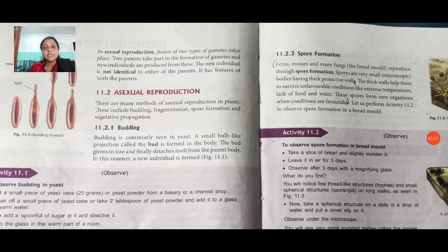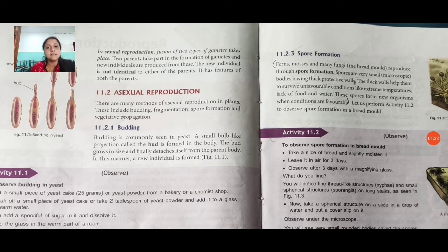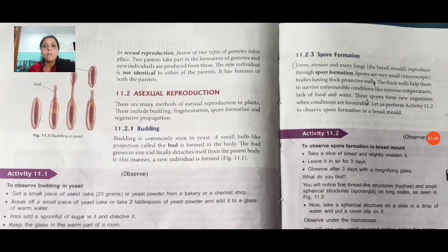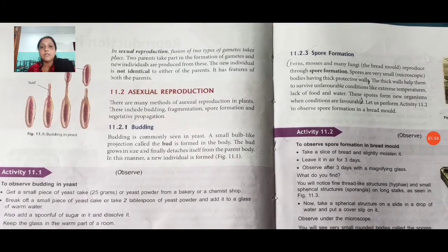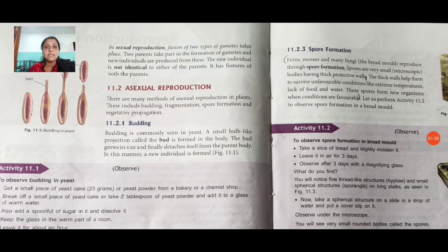In asexual reproduction in plants, there are many methods including budding, fragmentation, spore formation, and vegetative propagation. First, we have budding, which is commonly seen in yeast. A small bulb-like projection called a bud is formed on the body. The bud grows in size and finally detaches itself from the parent body, forming a new individual — as seen in Figure 11.1.